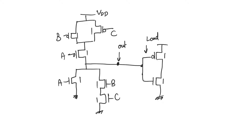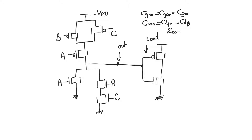Every transistor is sized to be a minimum sized transistor, so that their W/L is equal to 1. For simplicity, we assume cgn = cgp = cg, cdn = cdp = cd, and rn = r. Naturally, rp is going to be 2r, because the resistance of pMOS is double that of nMOS. The question is: what is the delay at node out?